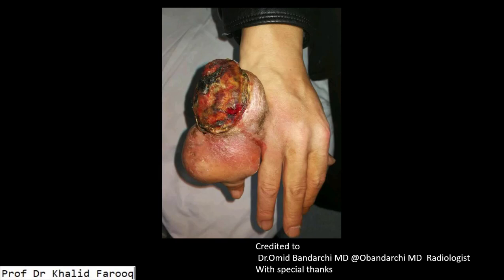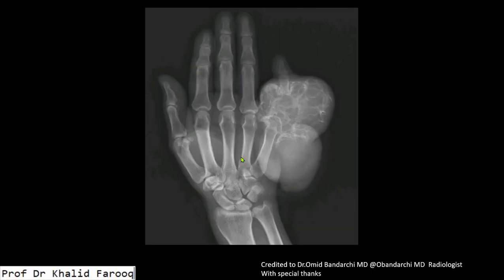Here we have a photograph of the hand — this is the little finger, which shows an aggressive mass lesion. This is the X-ray of the same hand; we can see an expansile lytic lesion with multiple septa in it, giving a typical soap bubble appearance or bubbly appearance. Here we can see there is associated abnormal soft tissue with it.